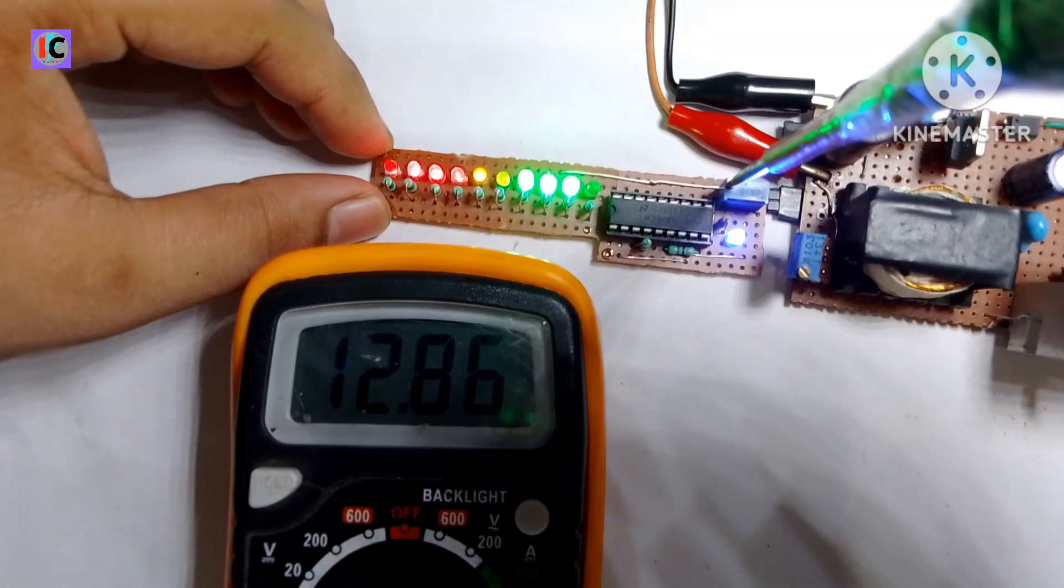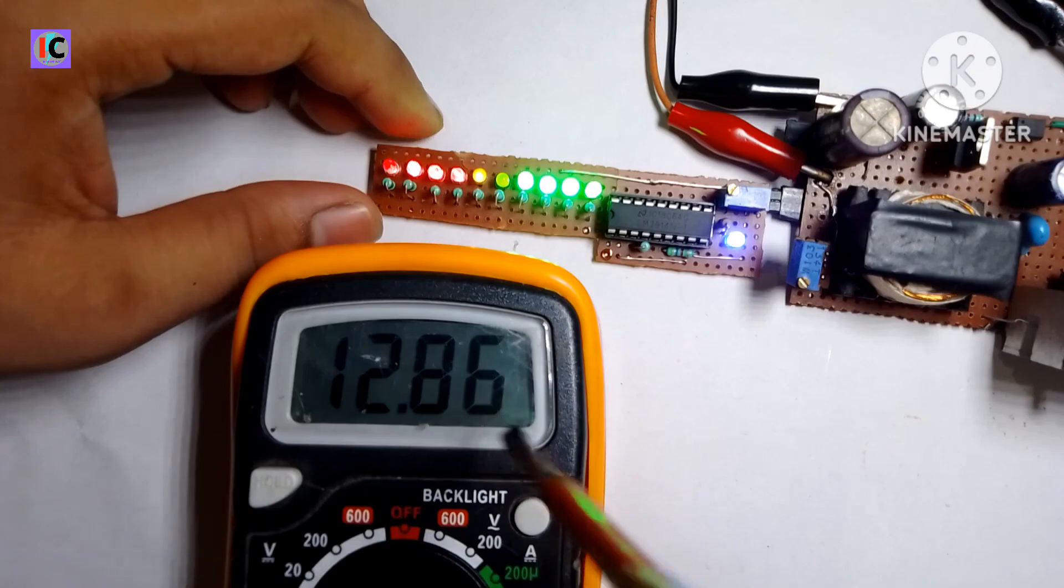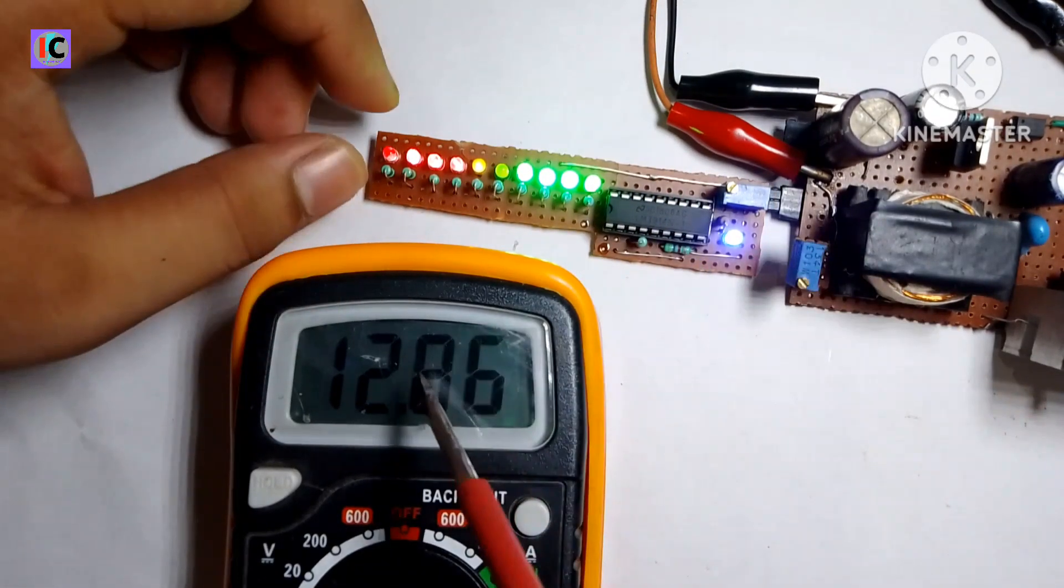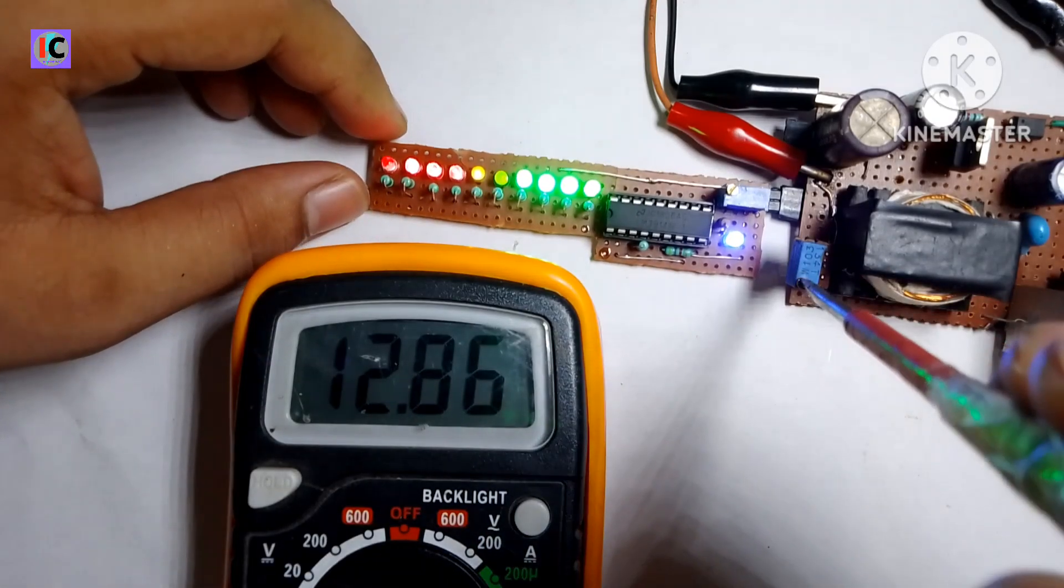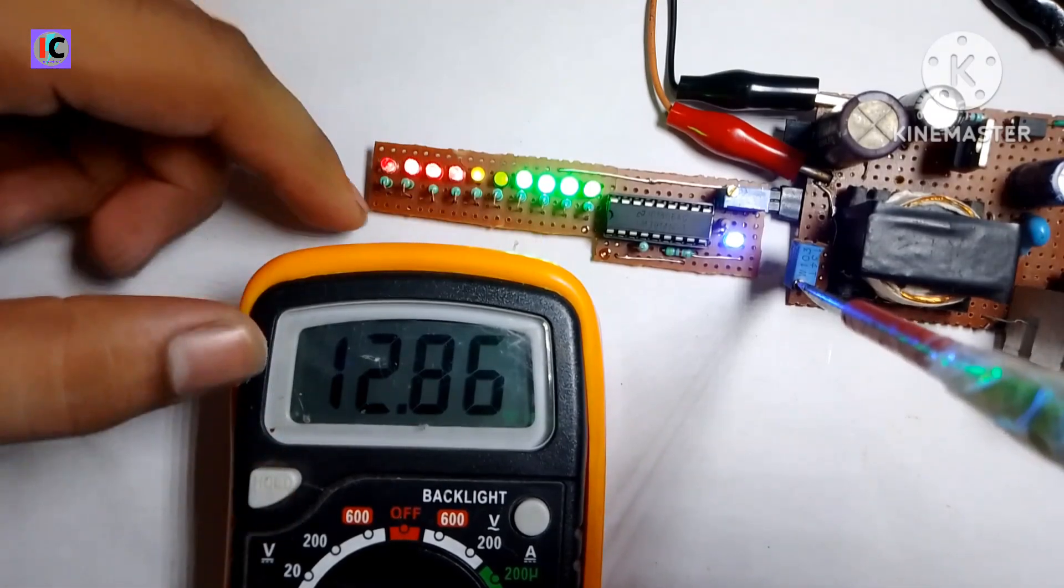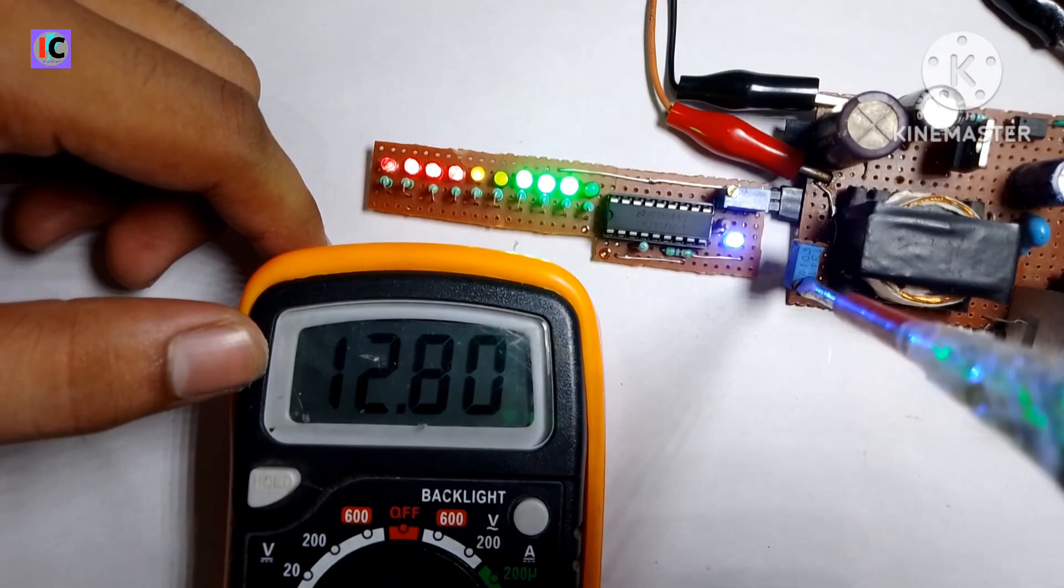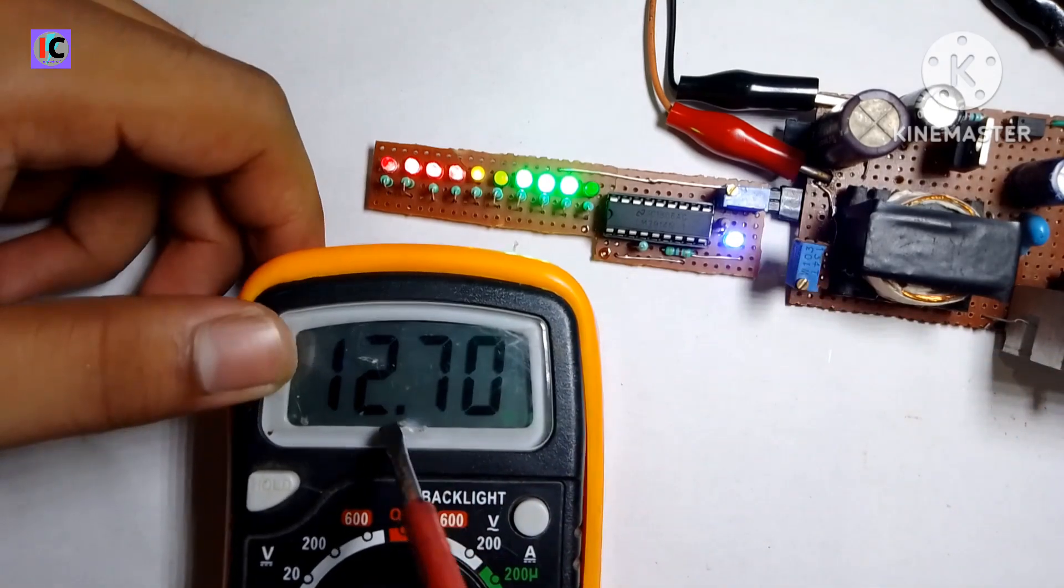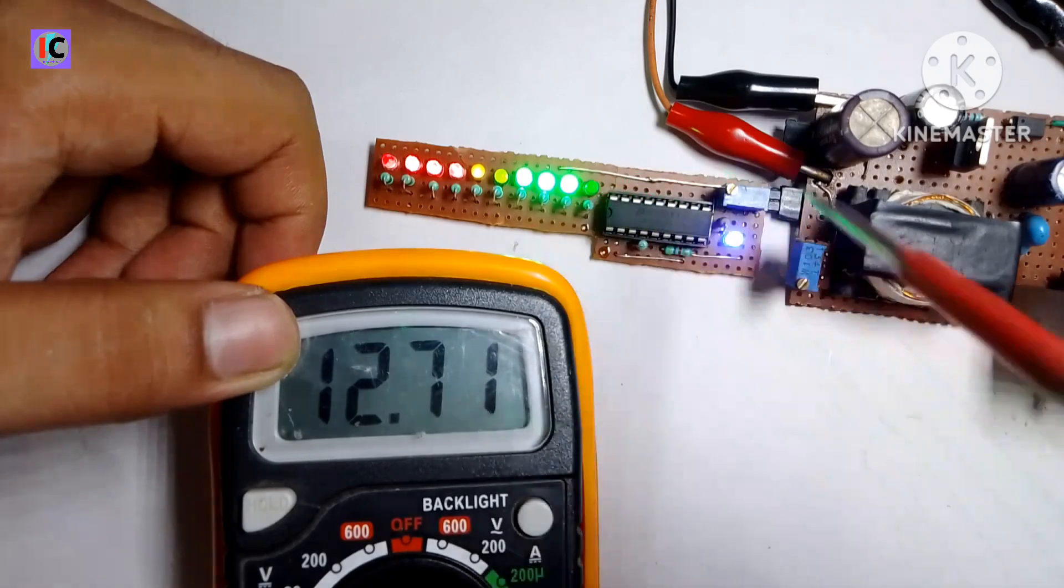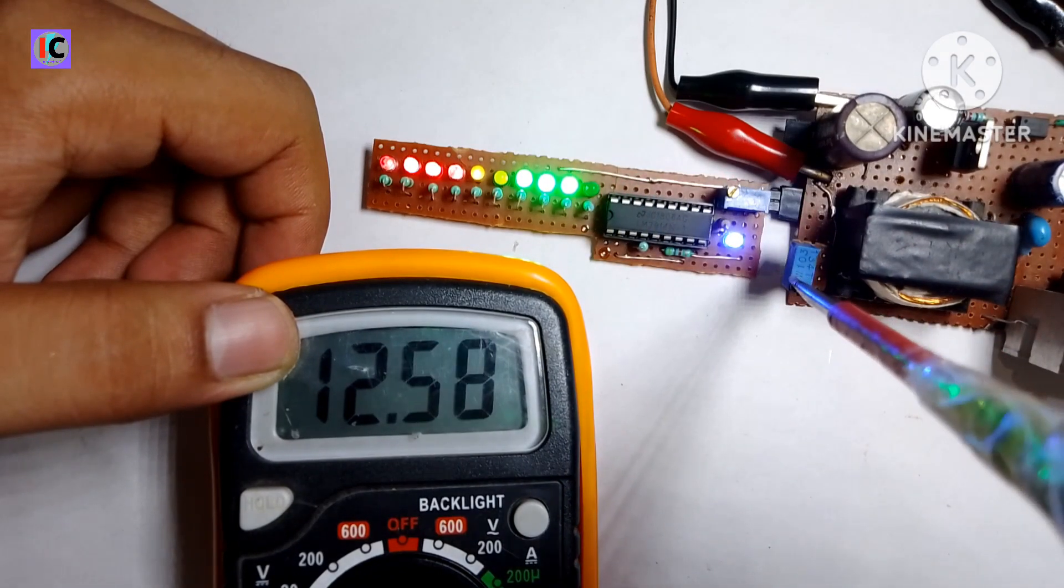You can see the calibration is done using the 10k preset on board of the module. If I decrease the voltage according to the potentiometer which is on the DC to DC converter, you can see the voltage goes below 12.7 volts and one green LED goes off.